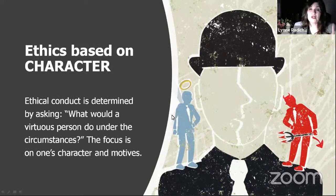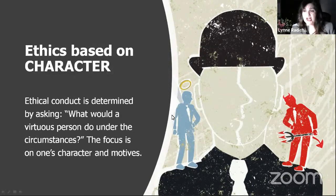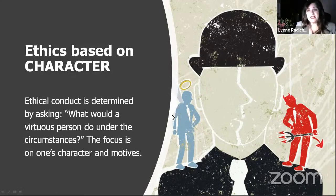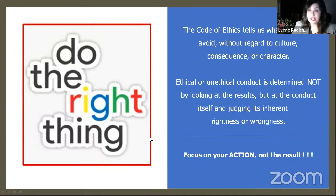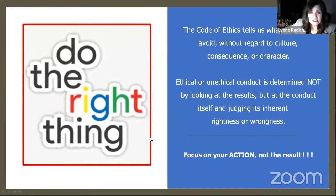Then we have ethics based on character, where ethical conduct is determined by asking what would a virtuous person do under the circumstances. The focus is on one's character and motives. Here at the Ethics Commission, we ask you to focus on your action, not the result. The code of ethics tells us what actions to avoid without regard to culture, consequence, or even character. Ethical or unethical conduct is judged by the conduct itself and its inherent rightness or wrongness.